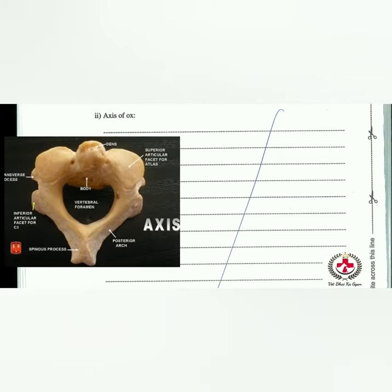Axis of ox: the second cervical vertebra (atypical) is named the axis because the atlas rotates around it. The body is long with a ventral spine extending caudally. The cranial end of the body is modified into a projected plate-like structure known as the odontoid process or dens. The foramen transversarium is narrow; transverse processes are undivided and projected backward.